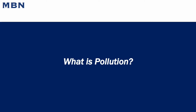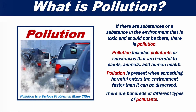What is pollution? If there are substances or a substance in the environment that is toxic and should not be there, there is pollution. Pollution includes pollutants or substances that are harmful to plants, animals, and human health. Pollution is present when something harmful enters the environment faster than it can be dispersed. There are hundreds of different types of pollutants.